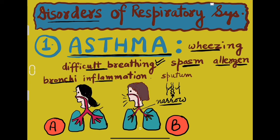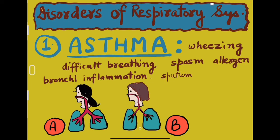But this is normal — okay — with a big lumen. There may also be sputum production in asthma. Sputum, that is phlegm, that is mucus.